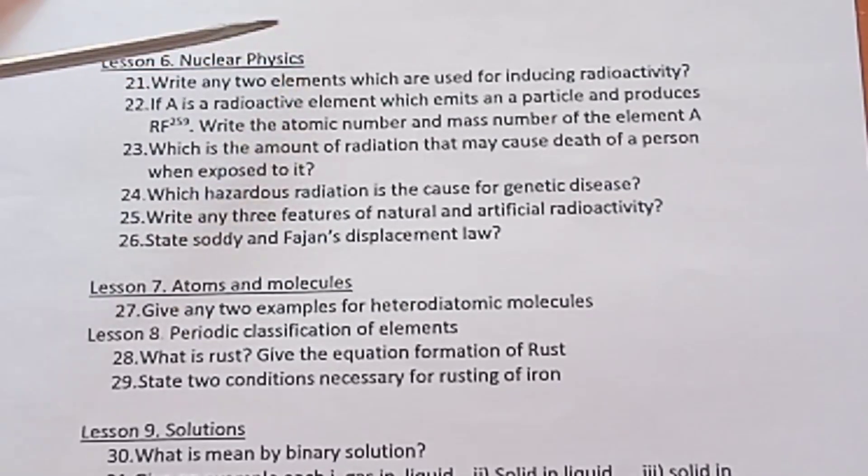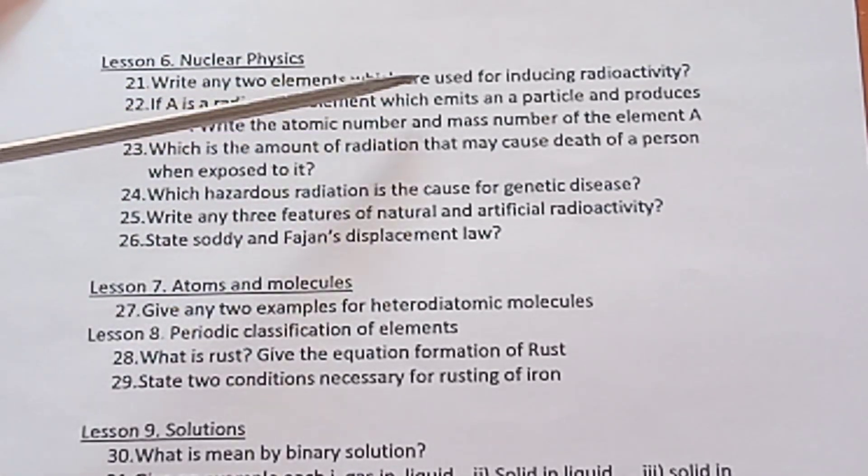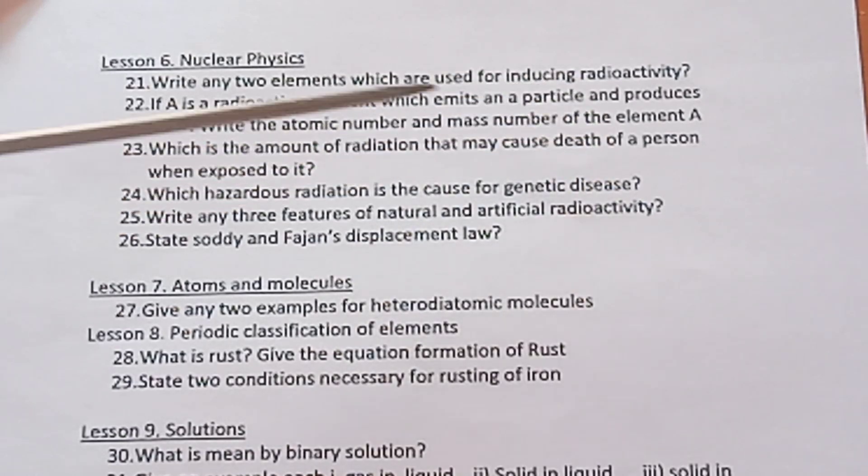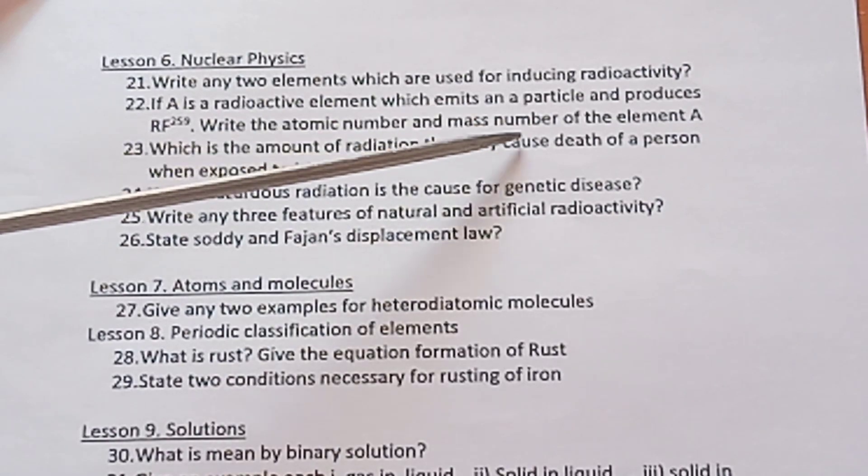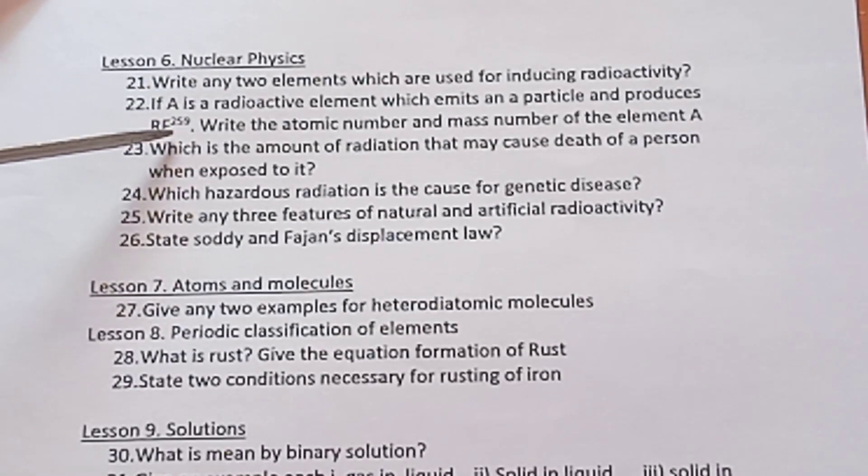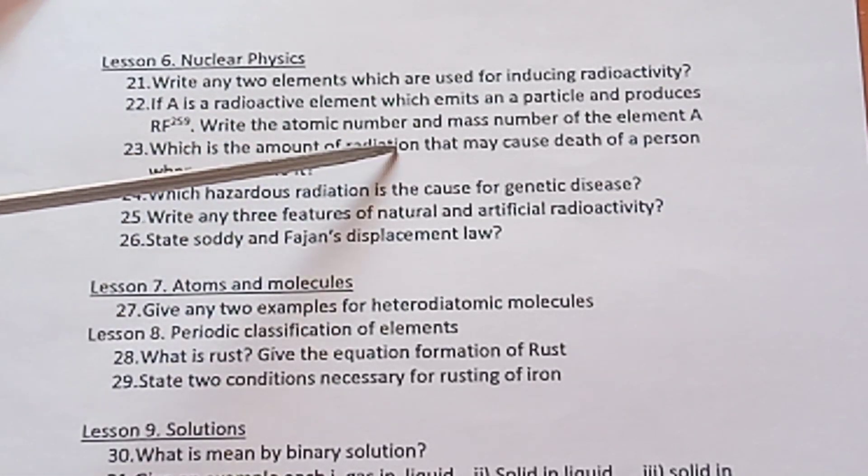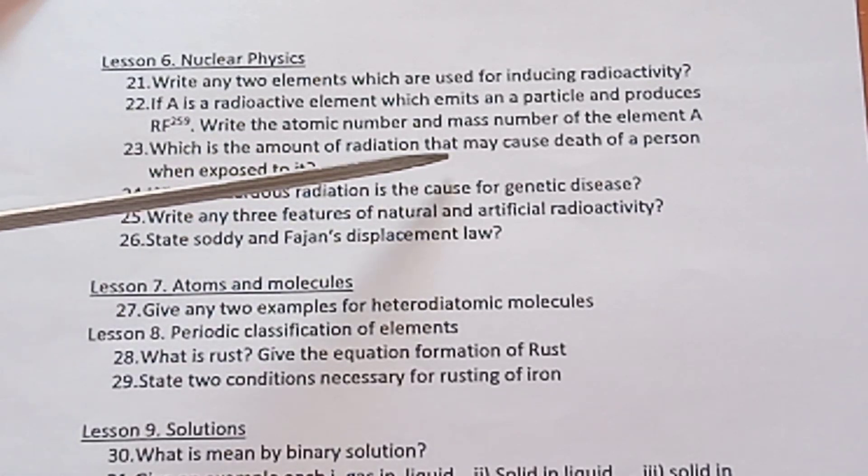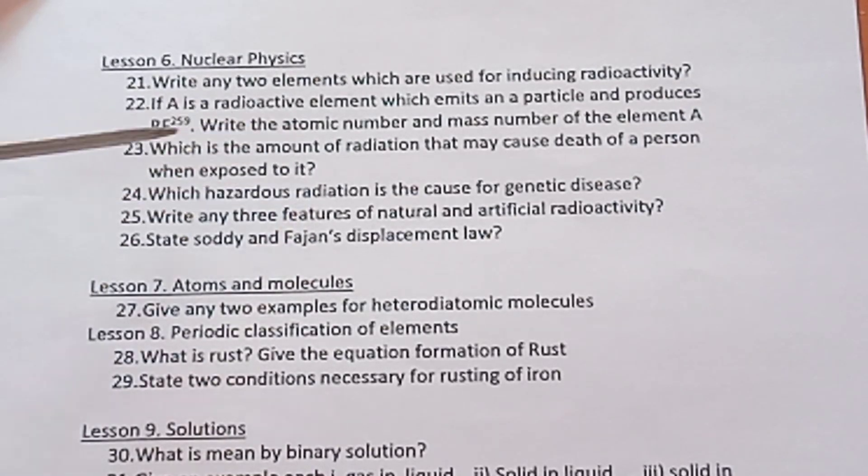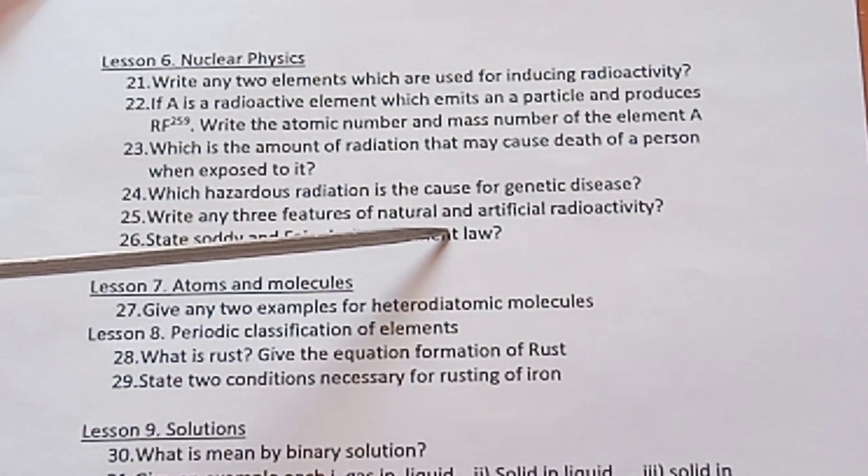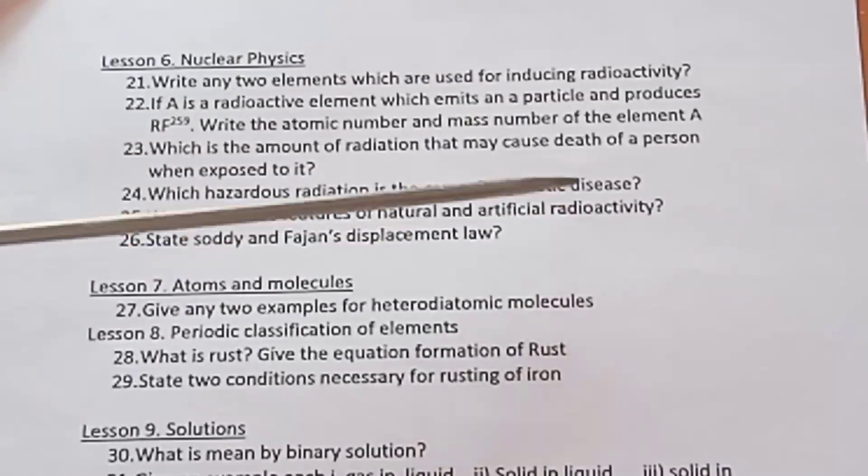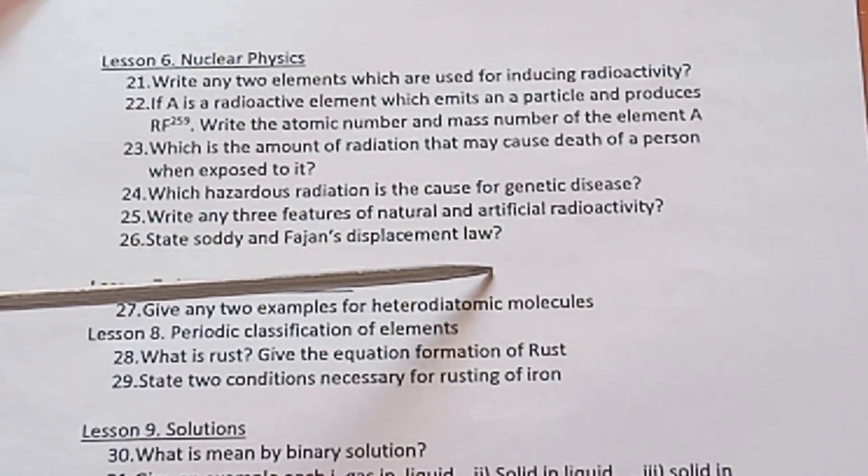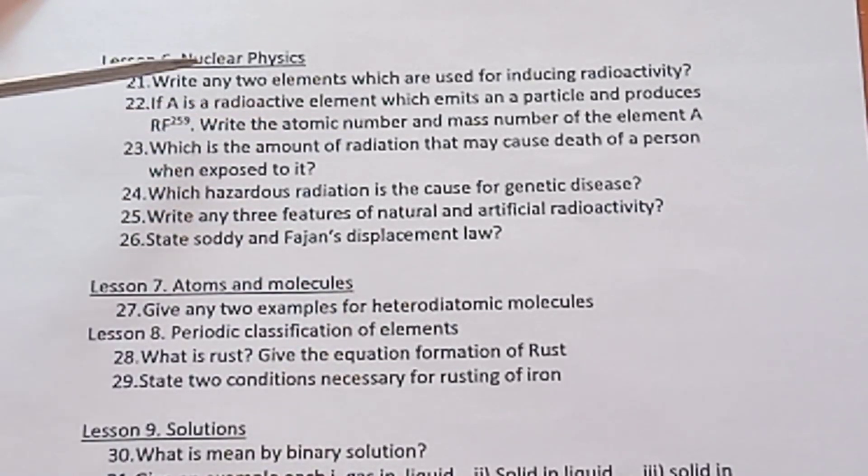Lesson 6 Nuclear Physics. Write any two elements which are used for inducing radioactivity. If A is a radioactive element which emits an alpha particle and produces Rf-259, write the atomic number and mass number of element A. Which is the amount of radiation that may cause death of a person when exposed to it? Which hazardous radiation is the cause for genetic disease? Write any three features of natural radioactivity in tabulation. State Soddy and Fajan's displacement law.